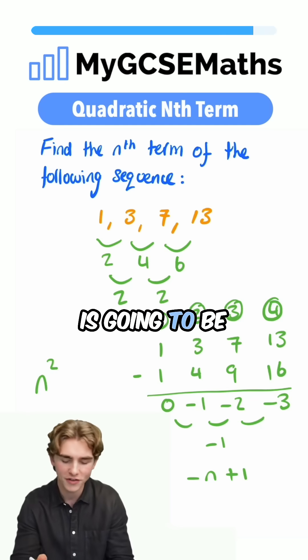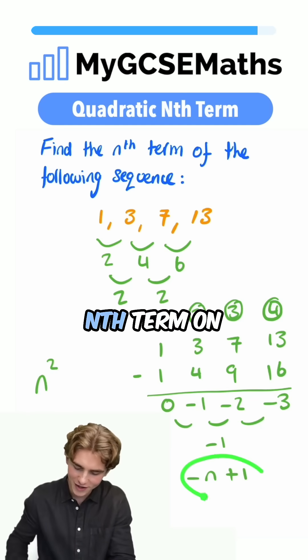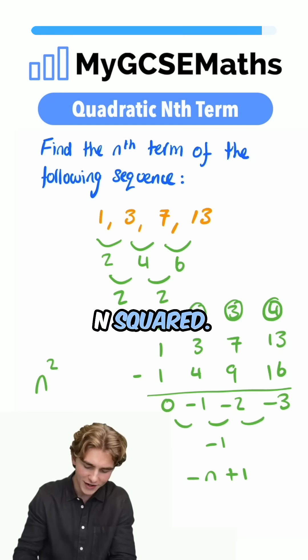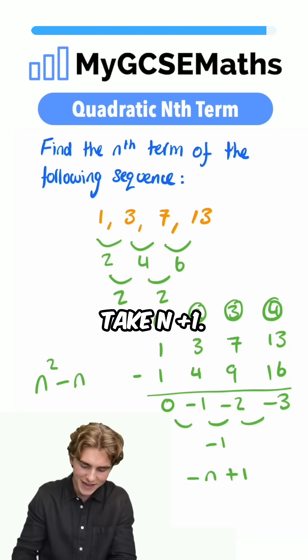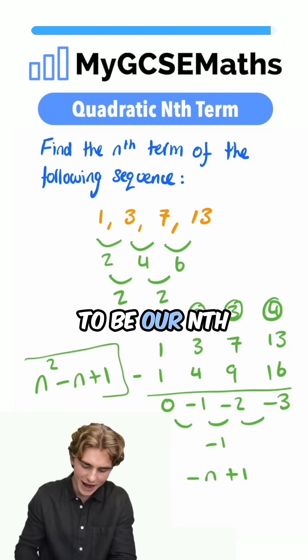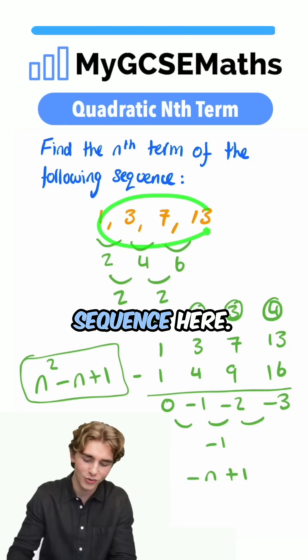The final step to this, guys, is going to be to tag this nth term on the end of our n squared, so we have n squared, take n plus 1. That is going to be our nth term of this sequence here.